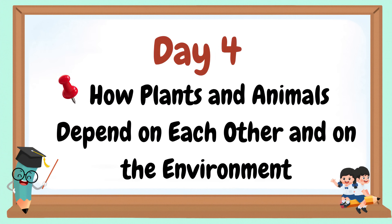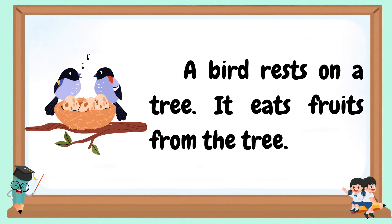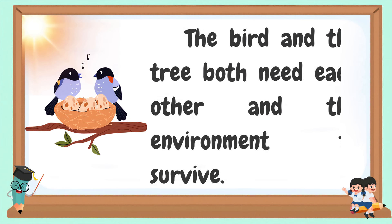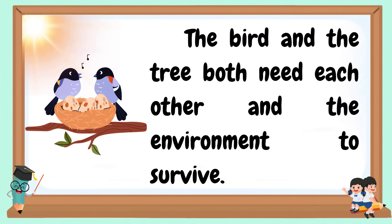Welcome to our day four: How plants and animals depend on each other and on the environment. A bird rests on a tree and eats fruits from it. The tree grows because it gets sunlight, water, and air from the environment. The bird and the tree both need each other and the environment to survive.